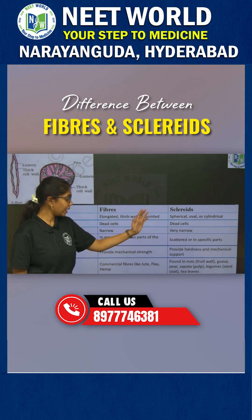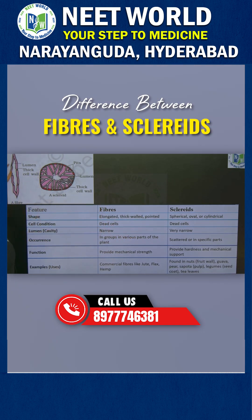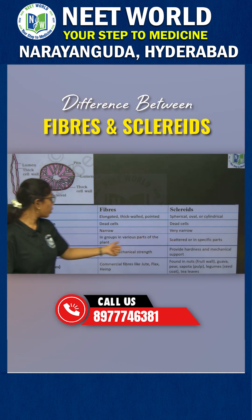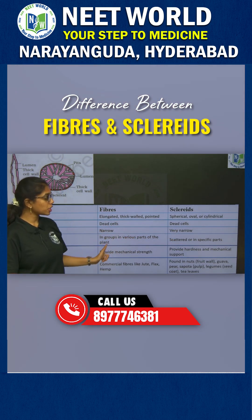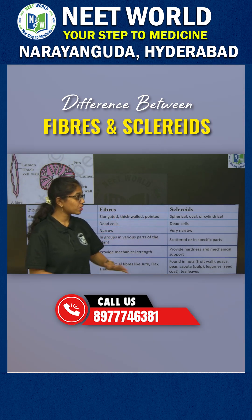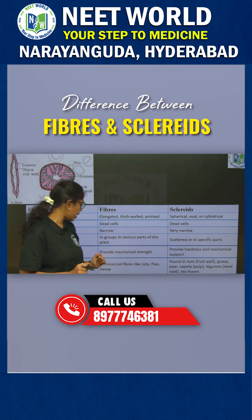Both of them are dead cells. In fibers, the lumen is narrow, whereas in scleroids, the lumen is very narrow. Fibers occur in groups in various parts of the plant, whereas scleroids are scattered in specific parts.